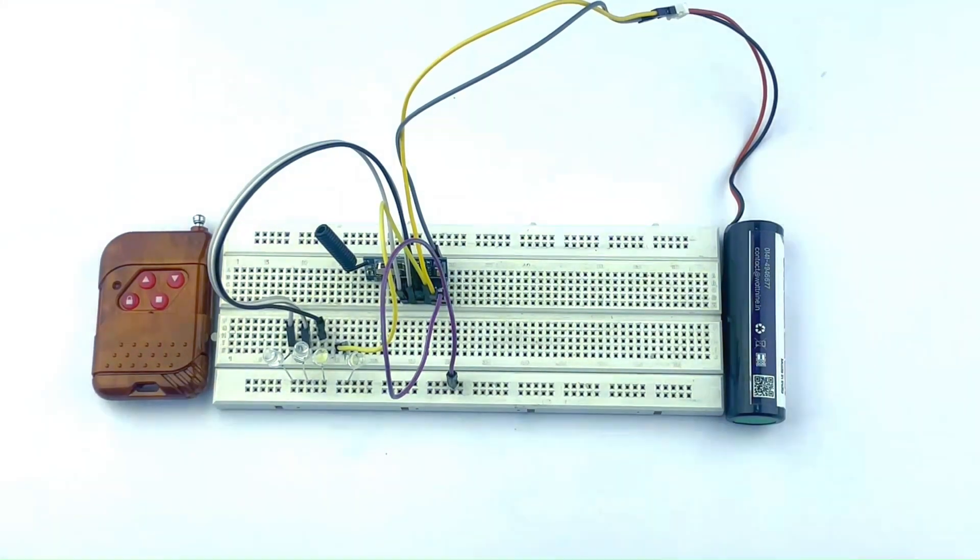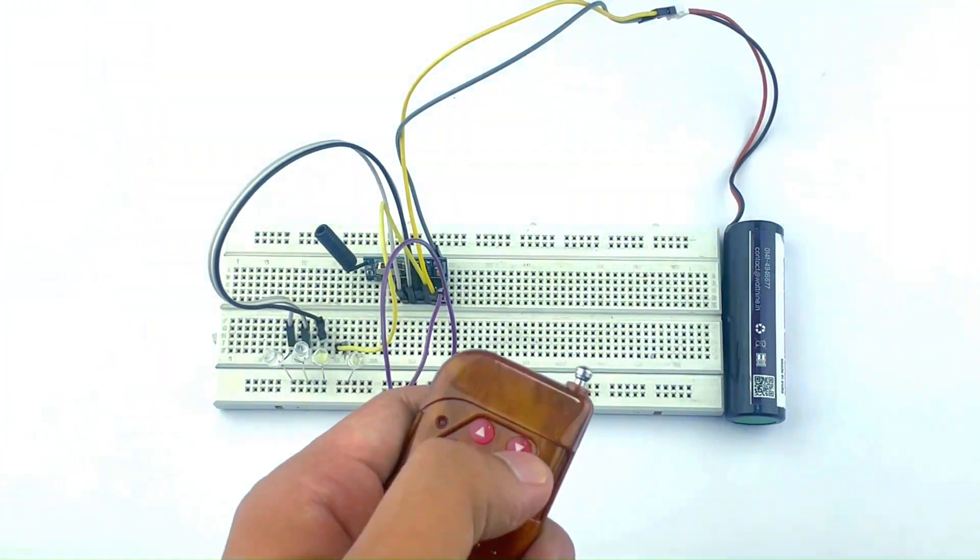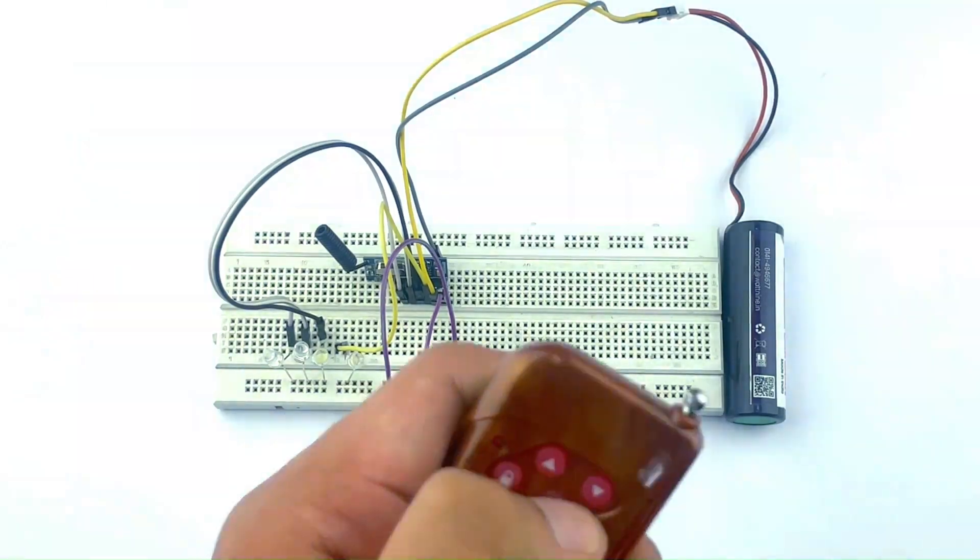I use a 3.7 volt lithium-ion battery to power the module. Its voltage range is 3.3 volts to 5 volts, so I have used a 3.7 volt battery. As you can see, I'm yet to connect it to the module, so I'll be doing it now.